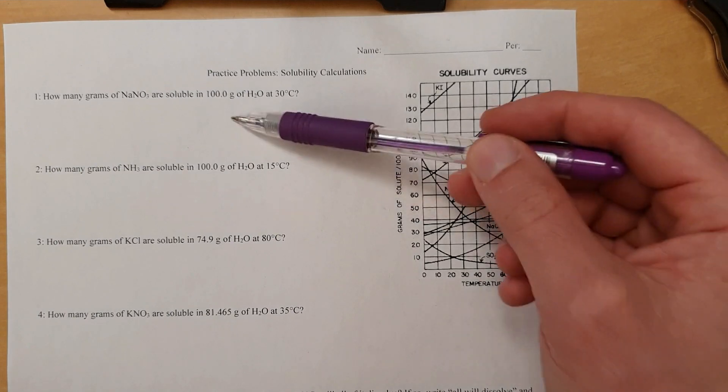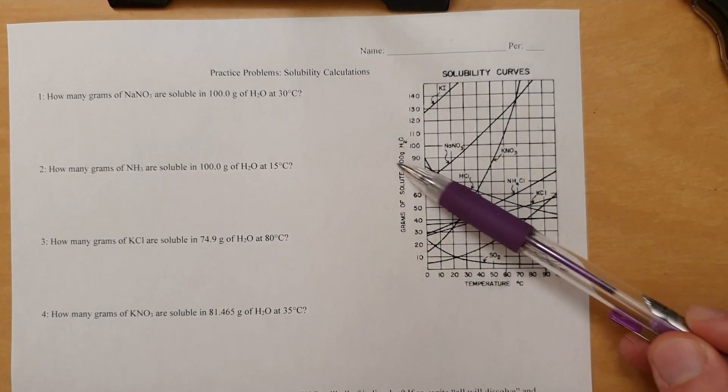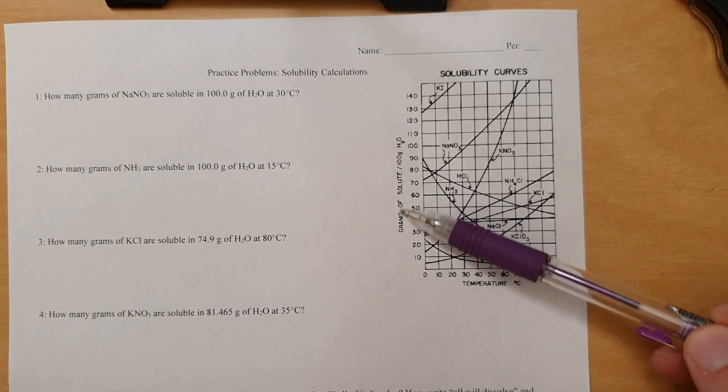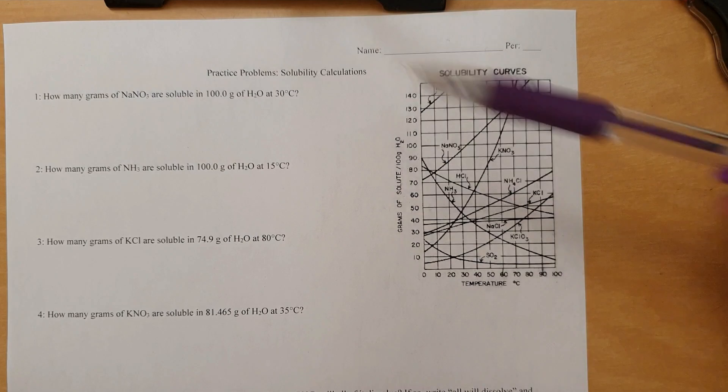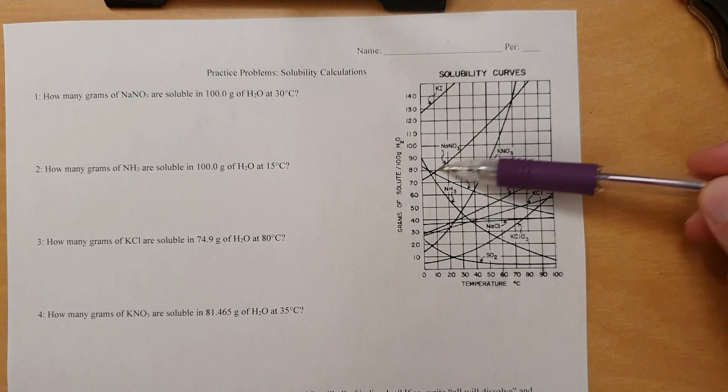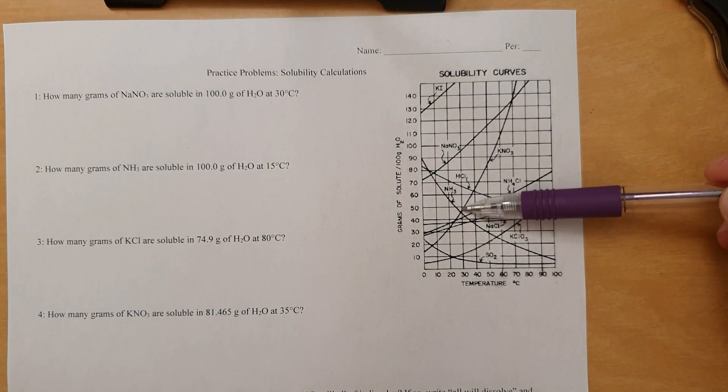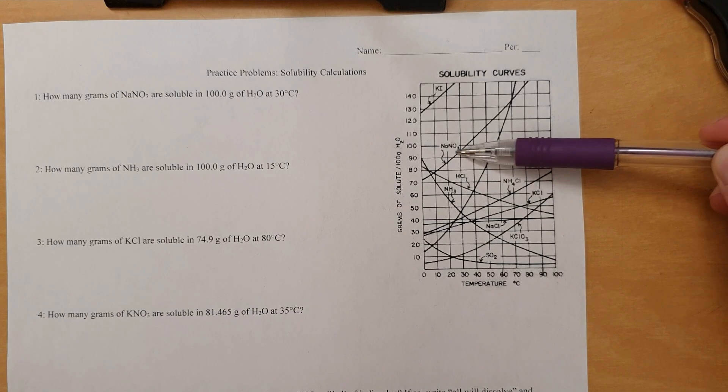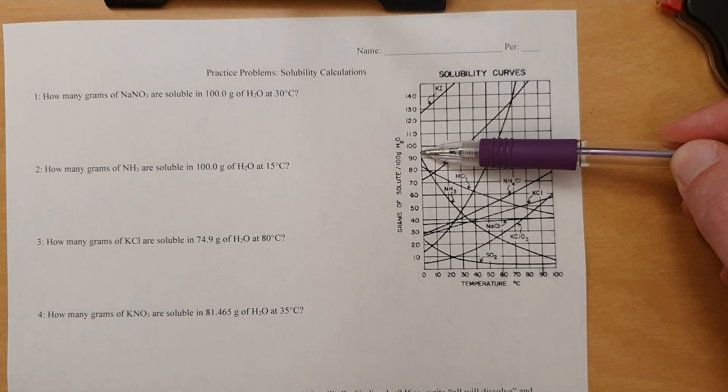So how do we use this to answer this? The short answer is, in 100 grams of water, that's this amount right here, amount per 100 grams. So you can just say NaNO3, and find it, which is right here, find 30 degrees Celsius, which is right here, find where it intersects with the NaNO3 line, and then draw it over here, and that's about 94 grams or so. So that's the answer, 94 grams are soluble.